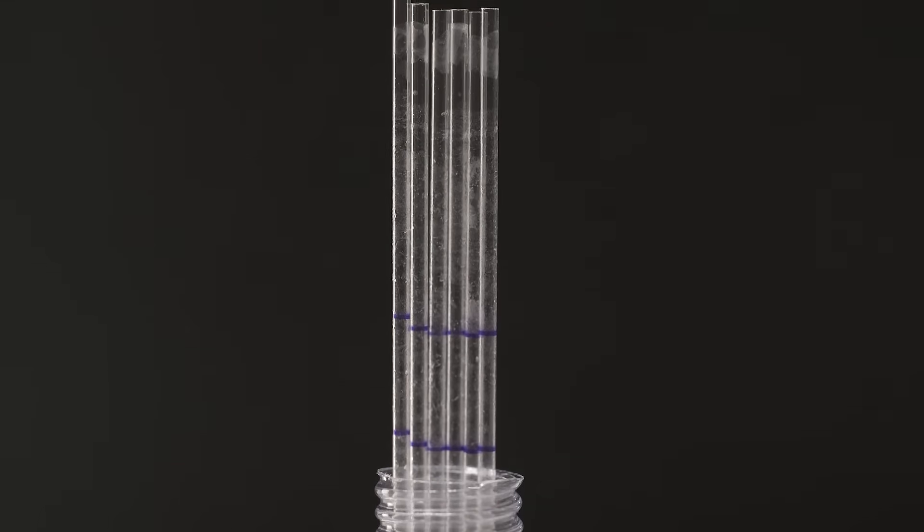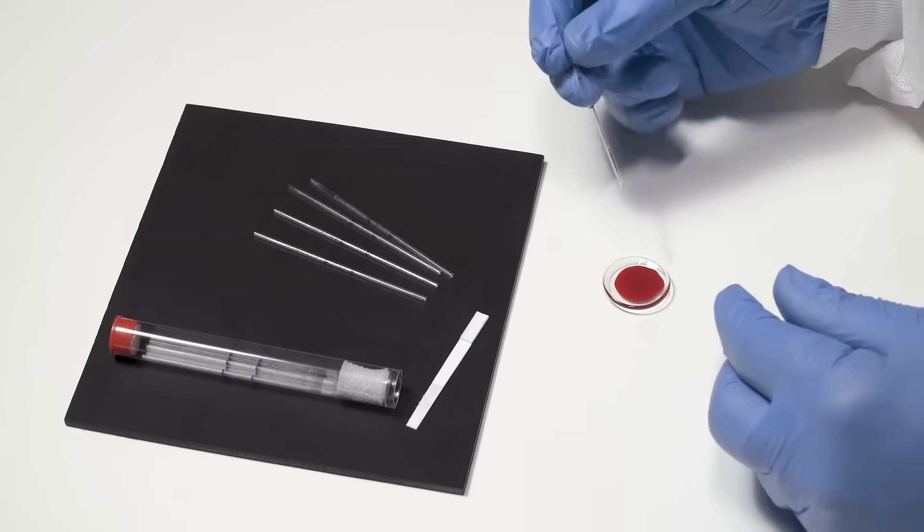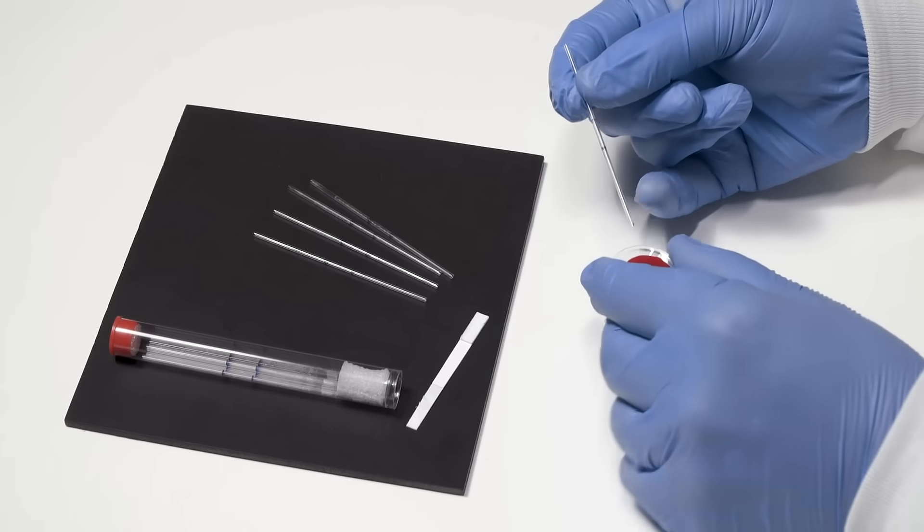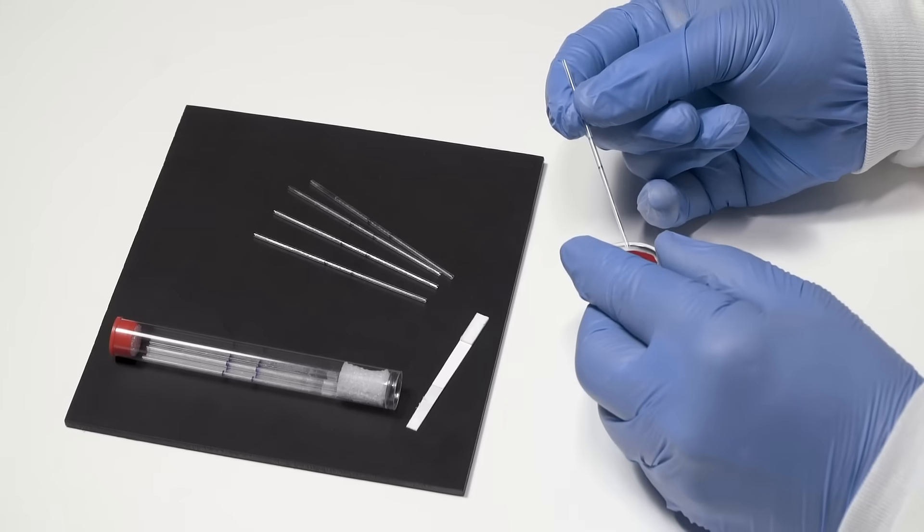Our dual fill tubes may be ordered with an optional EDTA treatment to delay coagulation. To use the dual fill tube, touch the tube to the sample at a downward angle and fill the tube to the predetermined line.